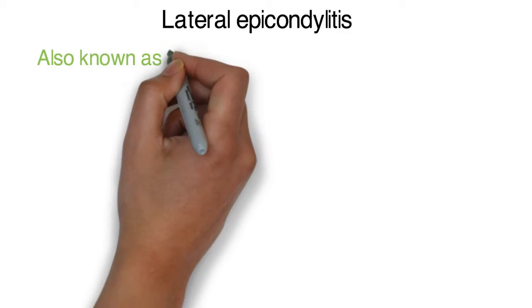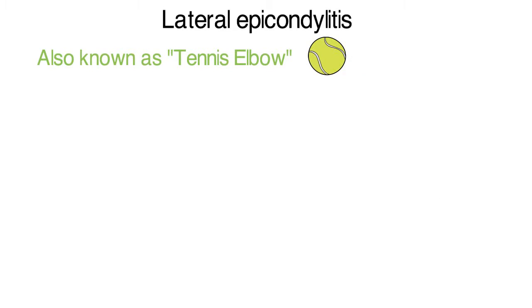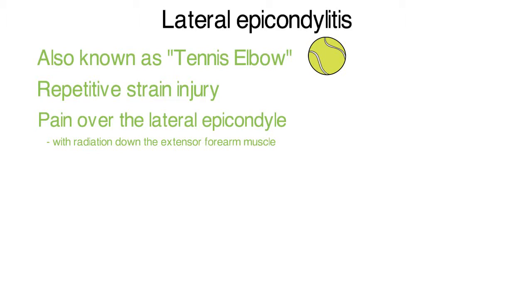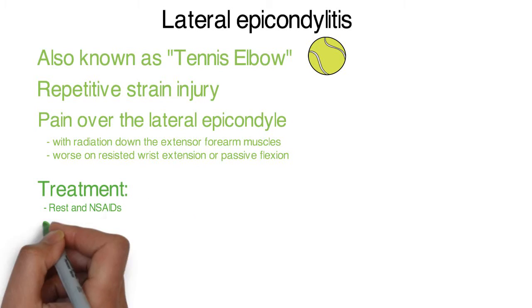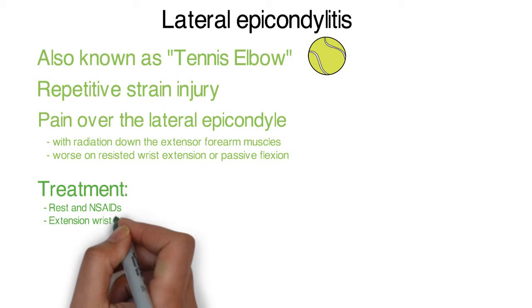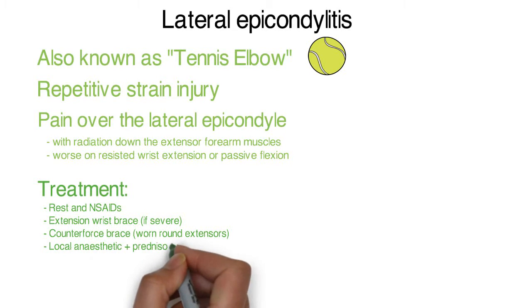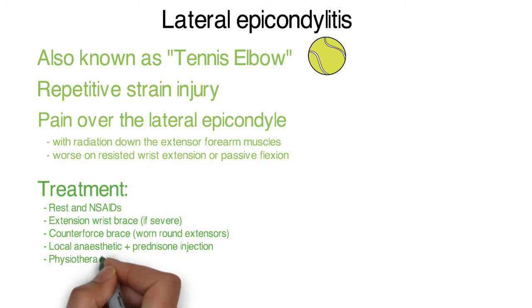Inflammation of the lateral epicondyle is called lateral epicondylitis, also known as tennis elbow. This is a repetitive strain injury characterised by pain over the lateral epicondyle, with radiation down the extensor forearm muscles, and exacerbated by resisted extension and passive flexion. Various conservative and medical treatment options are available, with surgical options reserved for cases failing to respond within 18 months.